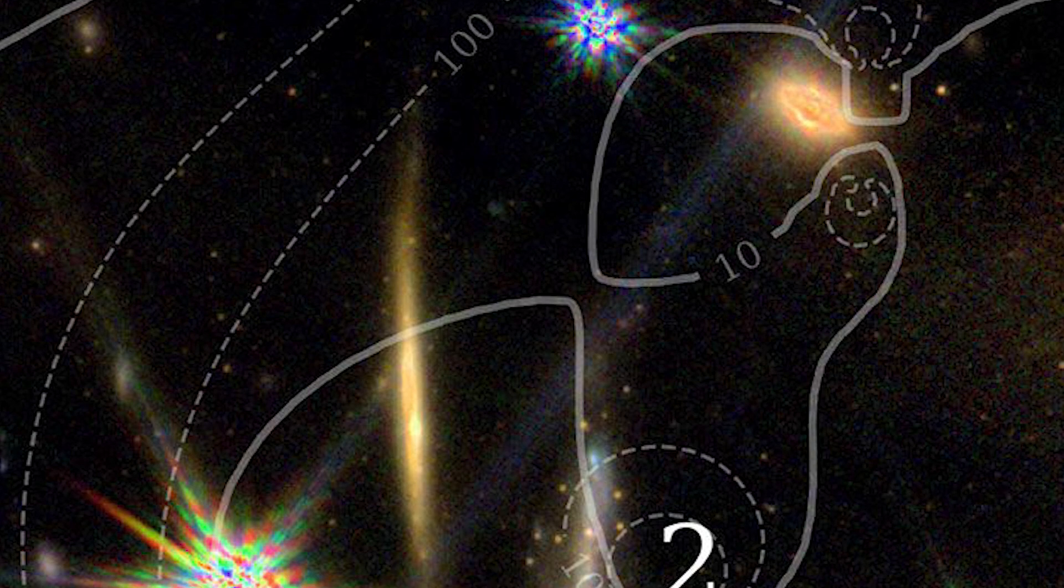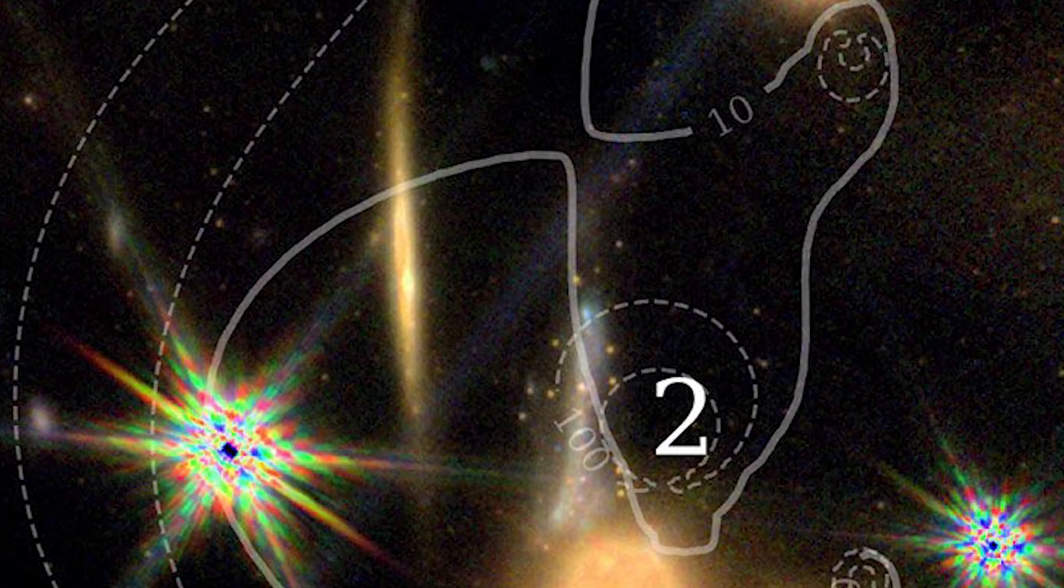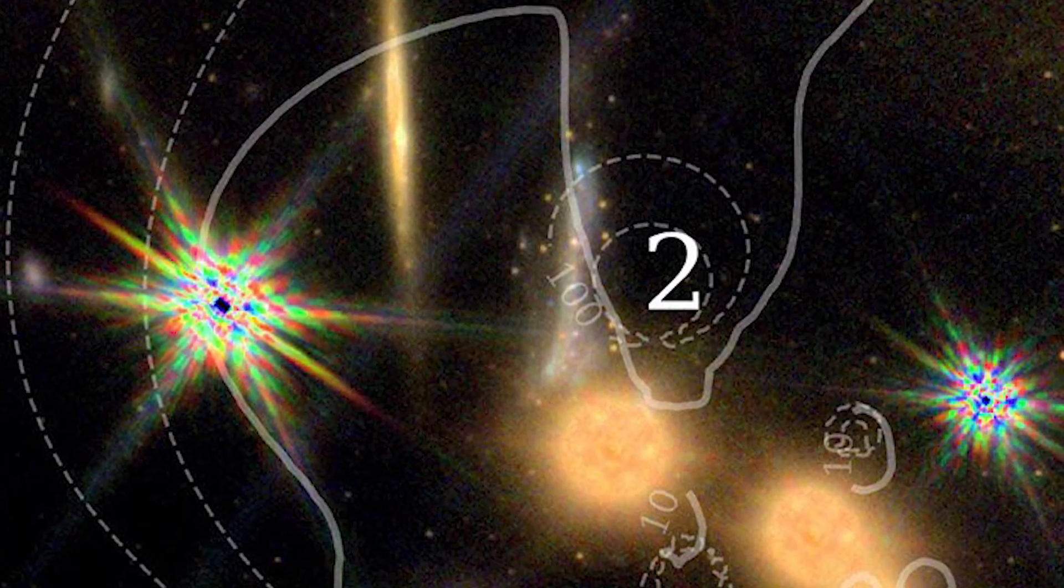These stars reside in dense groups referred to as globular clusters, and they surround a faraway galaxy that has been dubbed the sparkler.